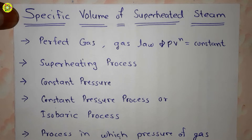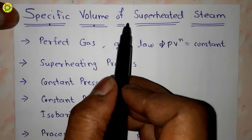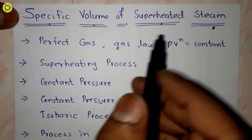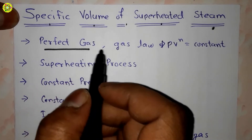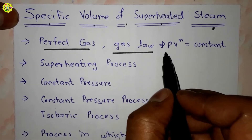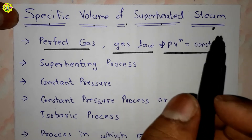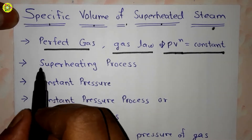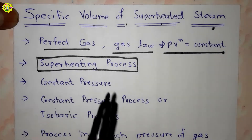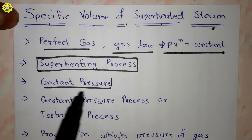Hi students, welcome. In this video we will study about specific volume of superheated steam. Superheated steam is a perfect gas which follows the gas law pv^n = constant. We obtain superheated steam from the superheating process, which is carried out at constant pressure.